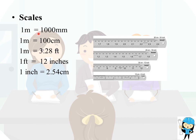It is very important to know the scales: 1 meter = 1000 mm; 1 meter = 100 cm; 1 cm = 10 mm; 1 meter = 3.28 feet; 1 foot = 12 inches; 1 inch = 2.54 cm.